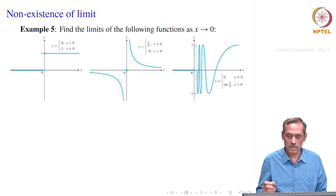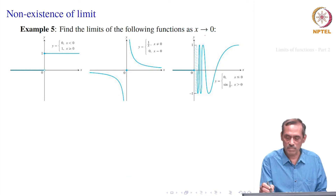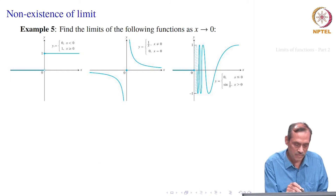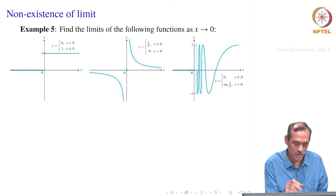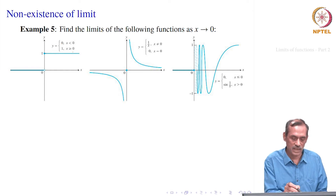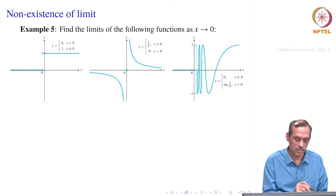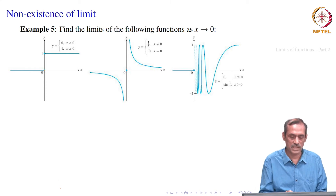Now, sometimes a limit may not exist — that is what we want to see how it happens. Find the limits of the following function as x goes to 0. In the first one, when x is less than 0, the function y equal to f(x) is defined to be 0. When x is greater than or equal to 0, it is defined to be 1. This is the graph — here 0 is excluded, you see a hollow dot, a hollow small circle, and at the top it is a solid one, so 1 is included there.